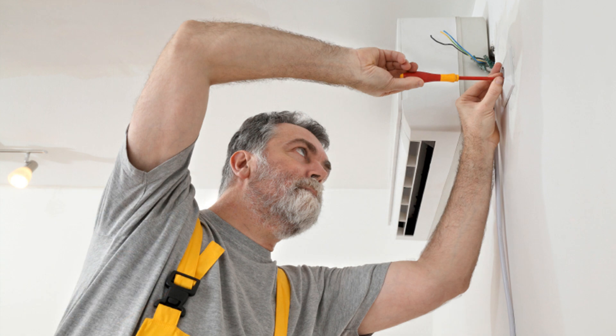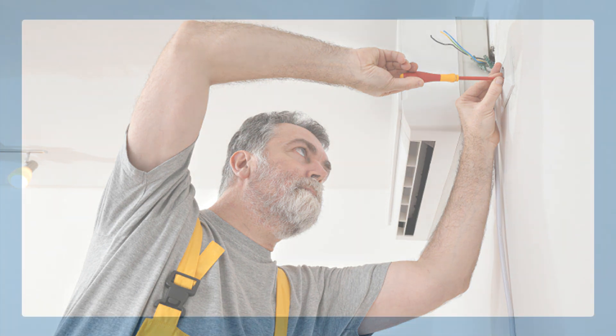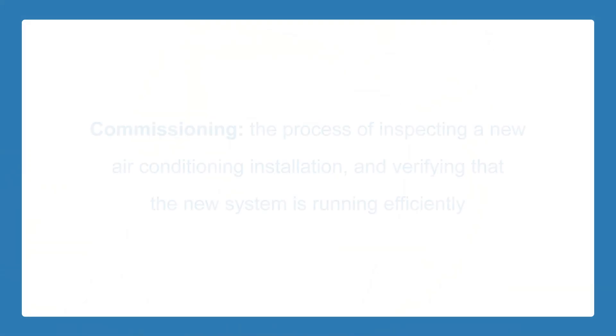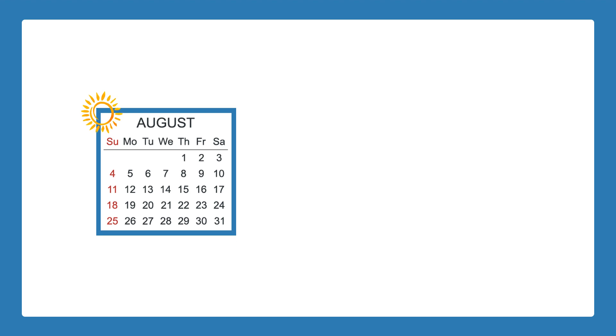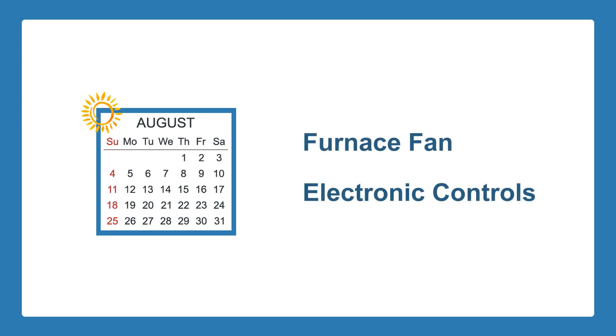The best way to figure out the problem is by first looking over the entire system for any obvious installation-related issues. After all, you can buy the best equipment, but if it's not installed correctly, the result can be unreliable or inefficient operation. Proper setup, known as commissioning, is very important in a complete and thorough installation so that your furnace and air conditioner are operating as they were designed to. During the summer months, your furnace fan and electronic controls are used almost as much as they are in the winter.